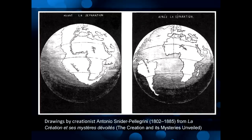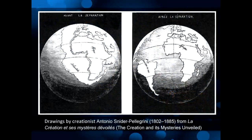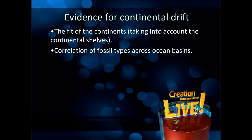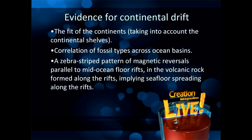You can see some drawings made by creationist Antonio Snyder. Geologists point to a number of evidences that the continents have moved apart — for example, the fit of the continents taking into account the continental shelves. Another evidence is the correlation of fossil types across ocean basins: similar fossil types line up if you put the continents back together. A further evidence is a zebra stripe pattern of magnetic reversals parallel to the mid-ocean floor rifts in the volcanic rock formed along those rifts, implying seafloor spreading.